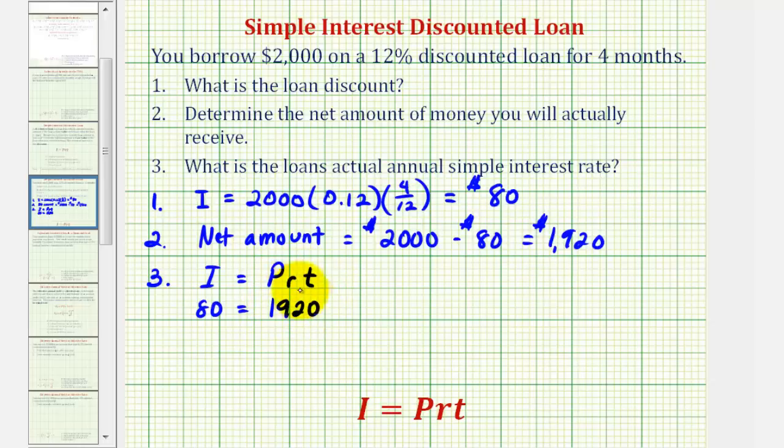We're trying to find R, the simple interest rate, so that's our unknown, times T, which is the time in years. Since it's four months, we already said it's four twelfths of a year, which simplifies to one-third.